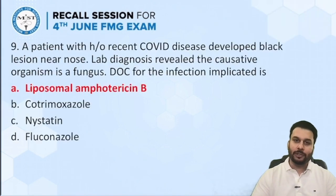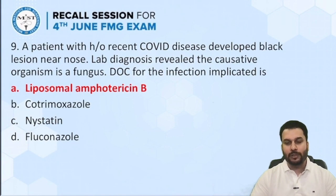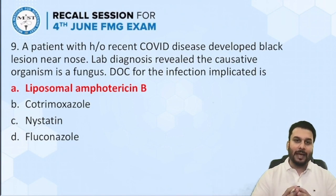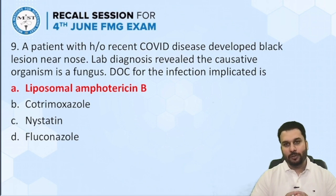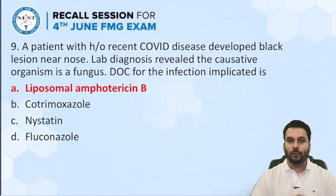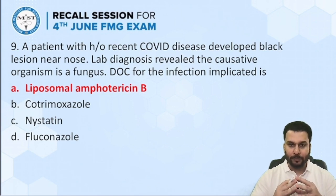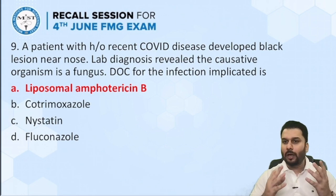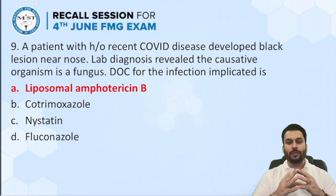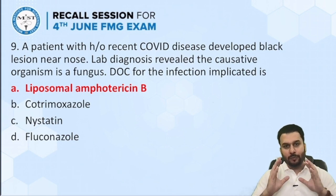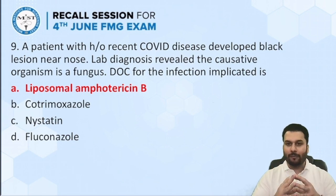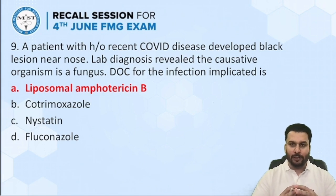Next: a patient with history of recent COVID disease developed a black lesion near the nose. Lab diagnosis revealed the causative organism is a fungus. What is the drug of choice for this infection? I'm sure you have already diagnosed this as mucormycosis. For severe fungal infections we go for amphotericin B, so the correct answer here is liposomal amphotericin B.